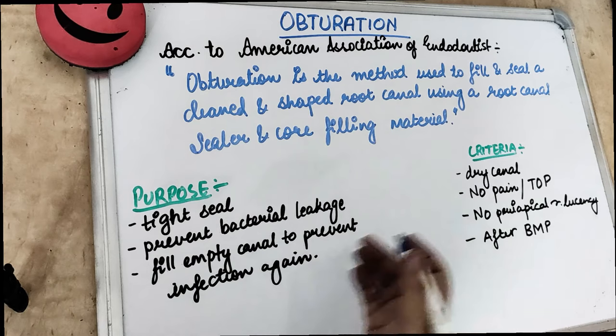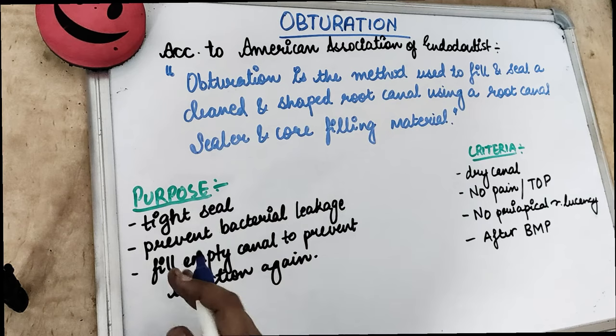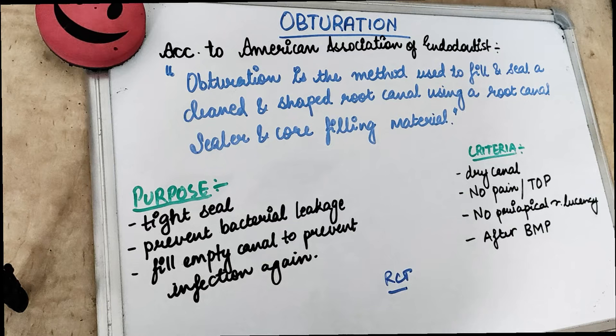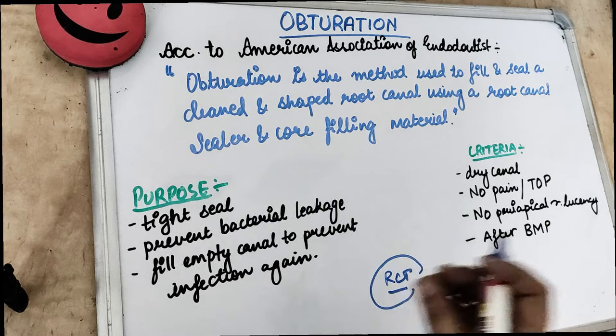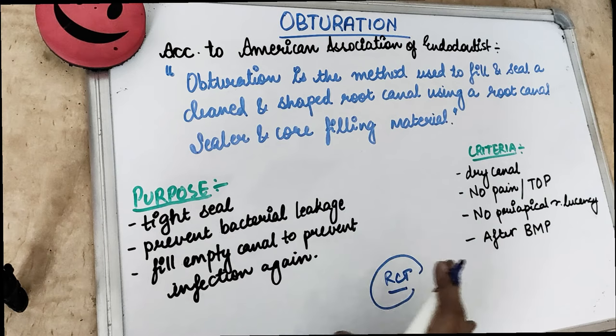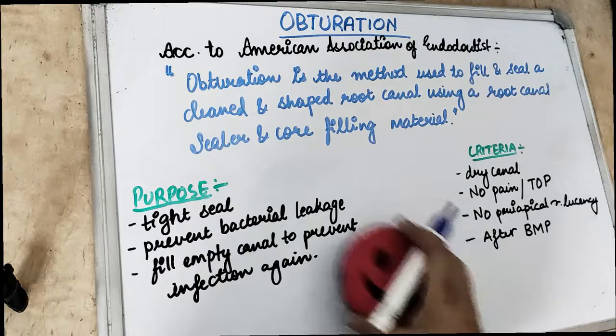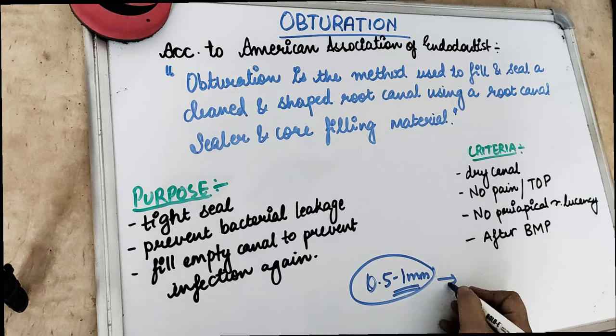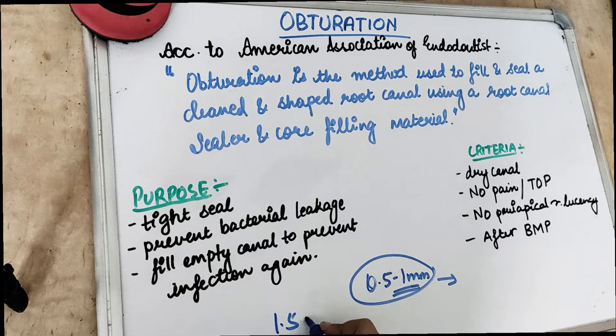Today's topic is obturation. After finishing and filing the instrumented root canal, obturation is the final step in root canal treatment. After the biomechanical cleaning and shaping of the canal — after the BMP — we have to obturate. Root canal treatment or obturation should end 0.5 to 1 millimeter from the radiographic apex. And if you remember Wien's classification, this is for the normal case scenario. If there is bone resorption, then we do it ending at 1.5 millimeters. And when there is bone as well as root resorption, then we end at 2 millimeters.